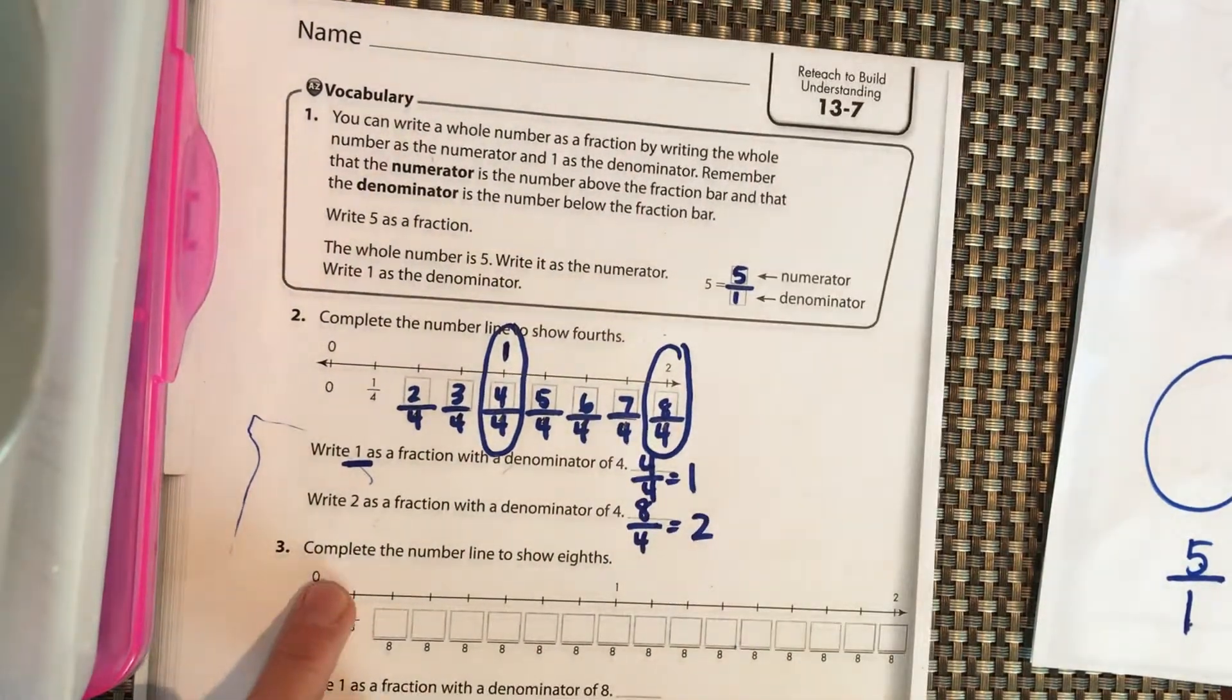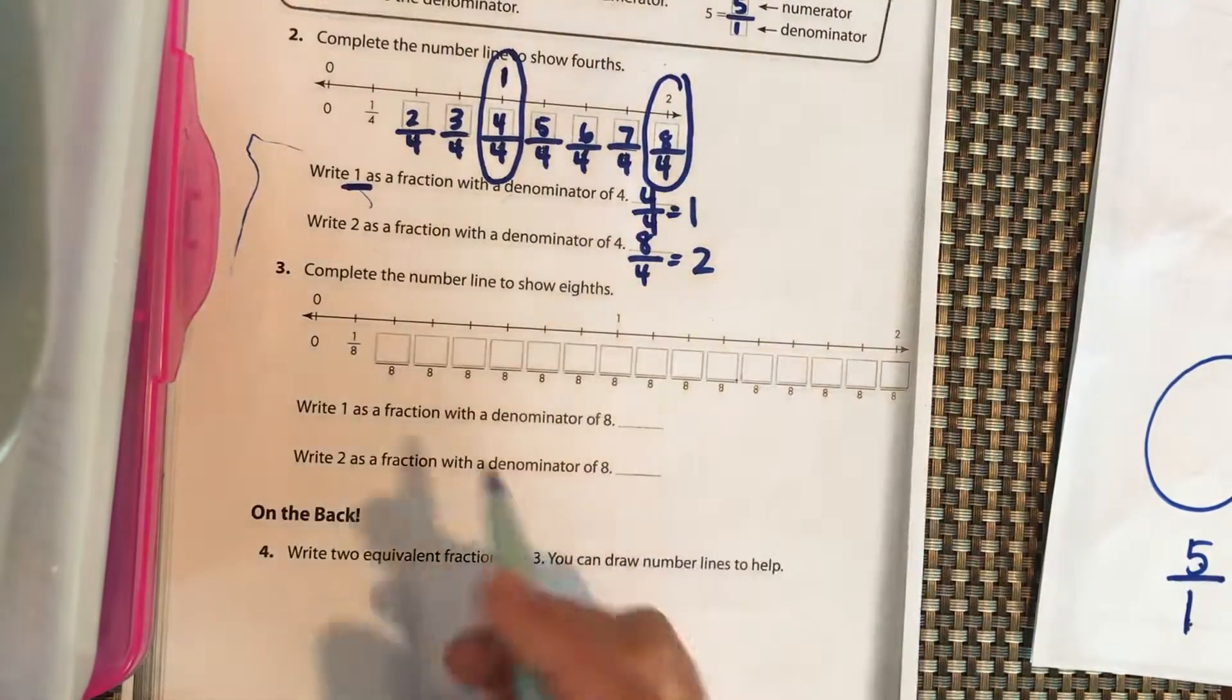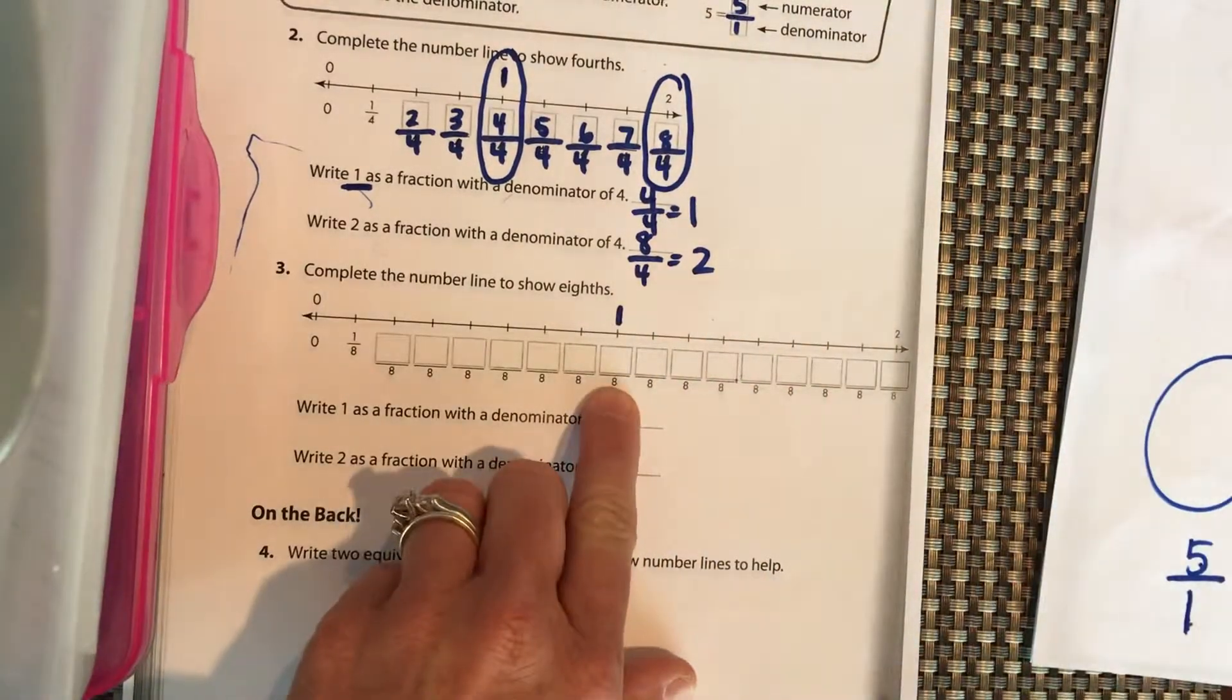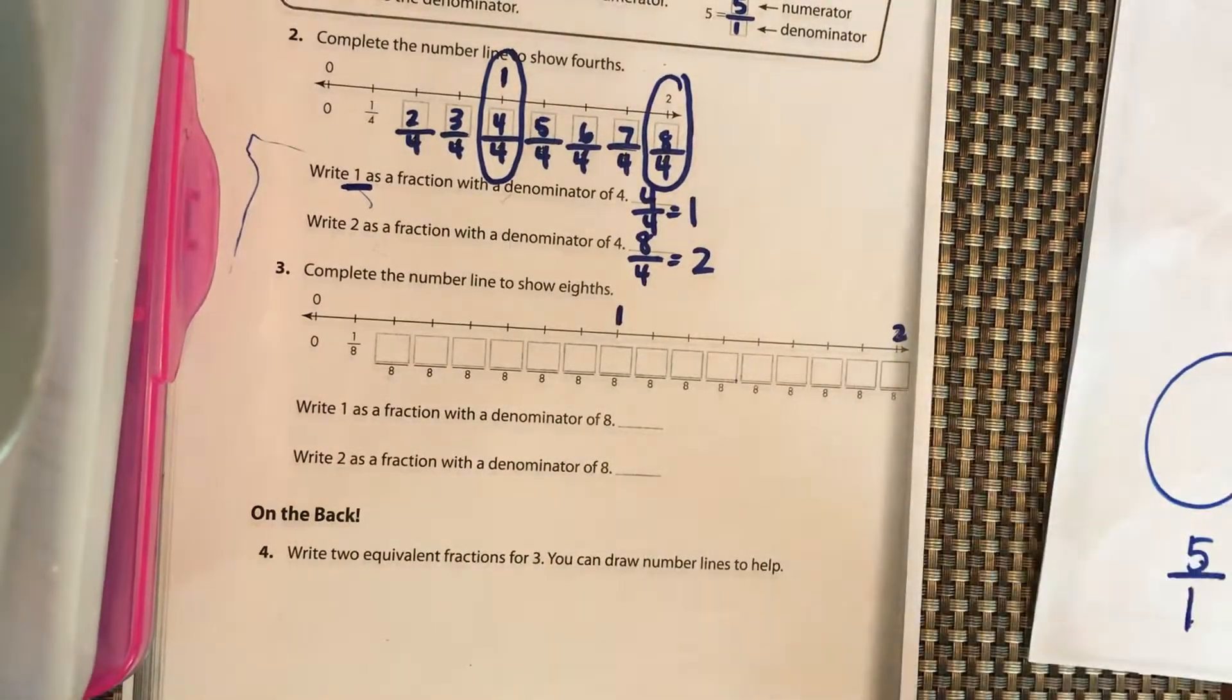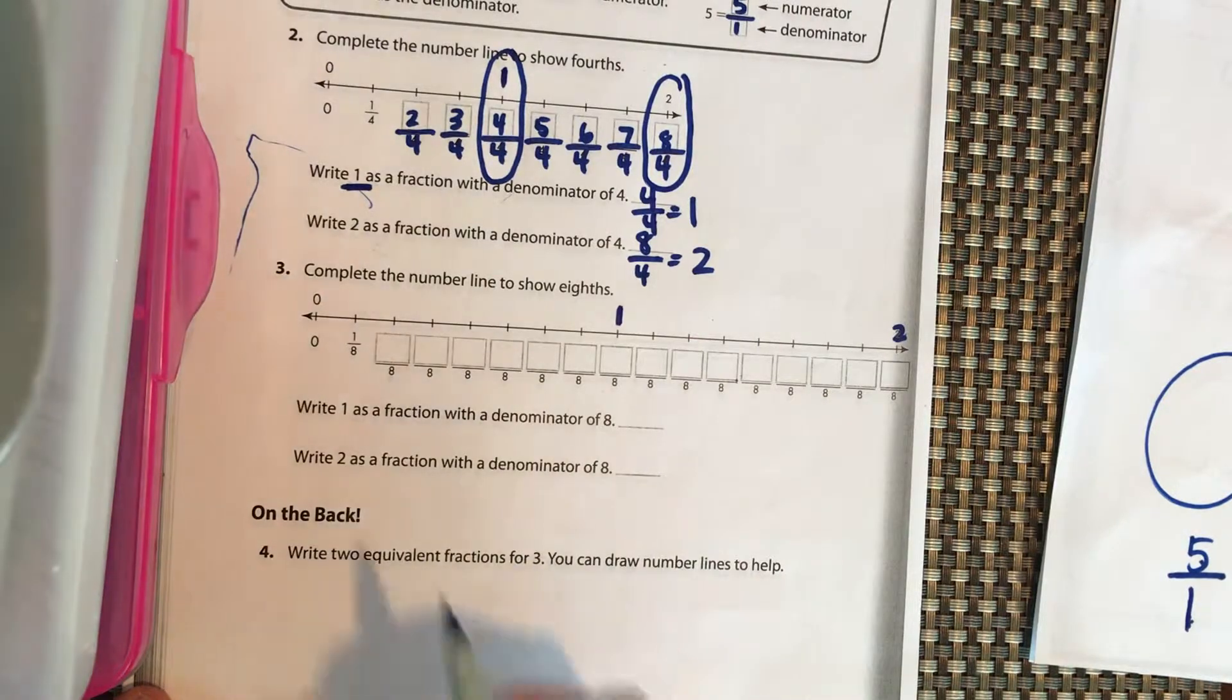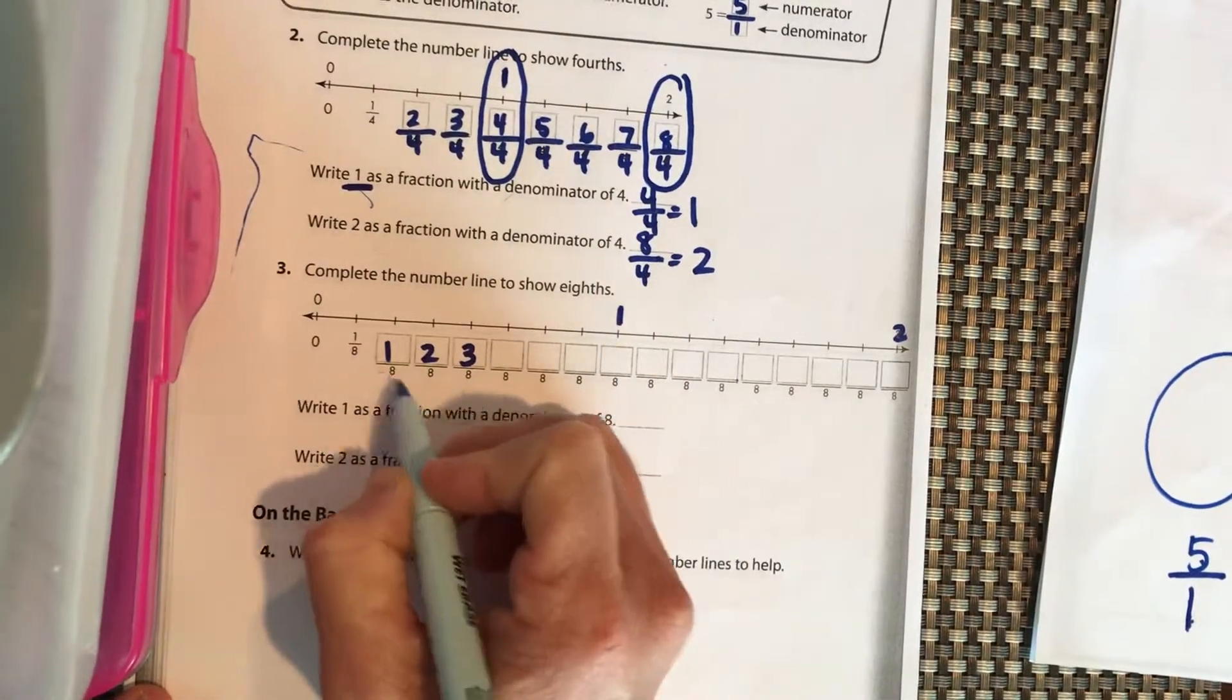So let's complete the number line showing eighths. I want you to pause it, and I want you to do it just like we did before. Whole number 1 should be 8 eighths. Whole number 2 should be 16 eighths because 16 divided by 8 is 2. So pause it and fill that in.